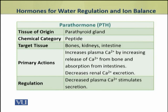Another hormone that plays a fundamental role in calcium ion regulation is parathormone. This hormone is produced by the parathyroid gland. It is a peptide hormone and its target tissues are bones, kidneys and intestine. It increases plasma calcium ion concentration by causing release of calcium ions from bone and their absorption from intestine. It also decreases the excretion of calcium ions from the kidneys. In this way, parathormone and calcitonin together maintain the concentration of calcium ions in the blood at a balance.